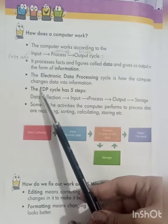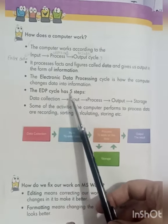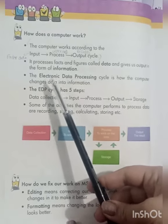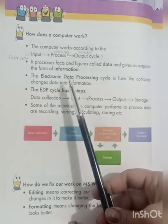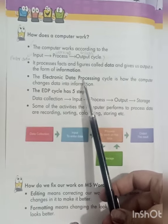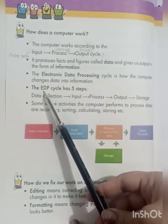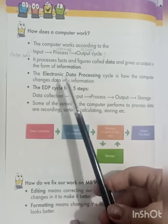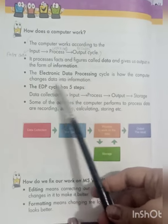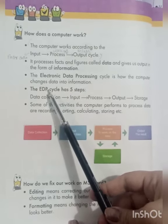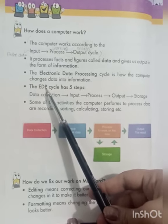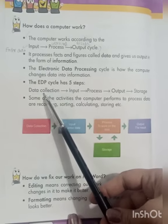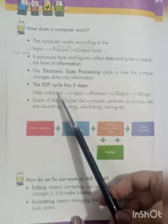The EDP Cycle — Electronic Data Processing — has five steps. The EDP Cycle also has five steps.